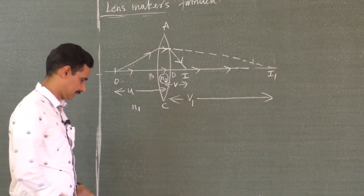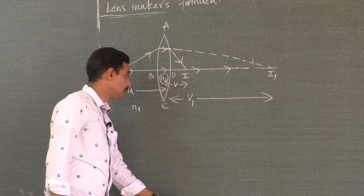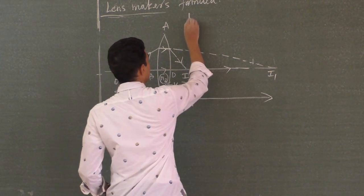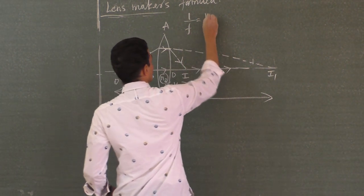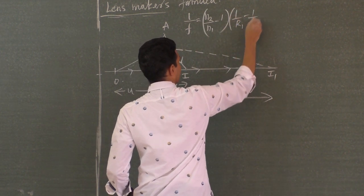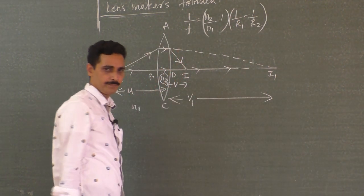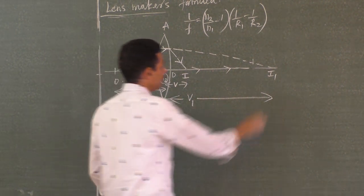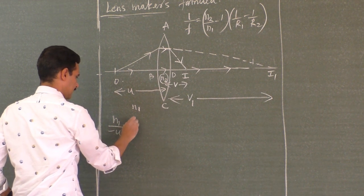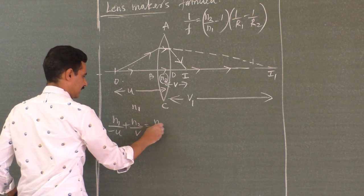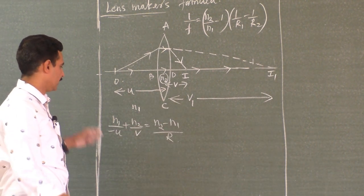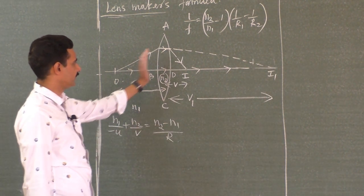Name the distances: OB is the object distance from the lens, Di is the final image distance from the lens, and Bi1 (or V1) is the image distance for the first surface. N1 is the refractive index of the medium outside; N2 is the refractive index of the lens. The final formula should be 1/f = (N2/N1 − 1) × (1/R1 − 1/R2). We must use the refraction formula N1/(−U) + N2/V = (N2 − N1)/R twice — once for each surface.